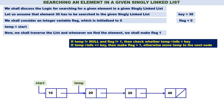Again check the condition: temp is not equal to null because temp is containing the address of node 20. Flag is not equal to 1. Both conditions are true. Therefore check the condition: temp of info is equal to key. What is temp of info right now? 20. What is key? 30. 20 is not equal to 30. Therefore temp is equal to temp of next.